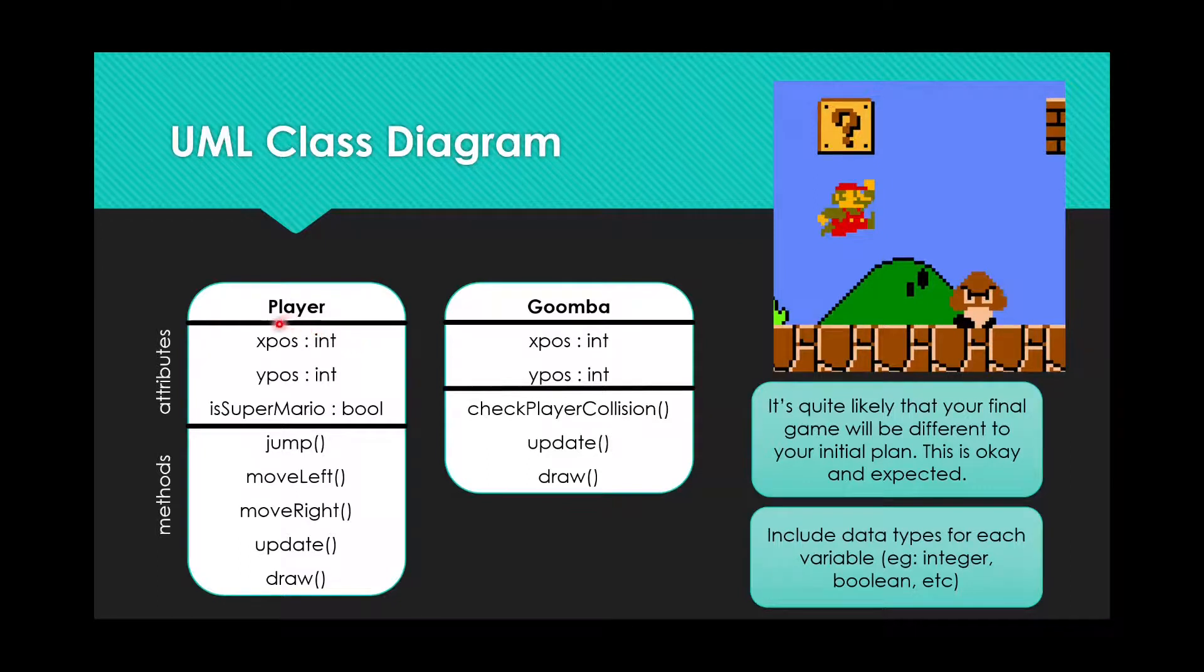As well as the attributes, which are the variables, we also have the methods. And the methods are the things that a player can do. You could have player.jump, and it will make the player jump. Player.moveLeft, and it will move the player left.